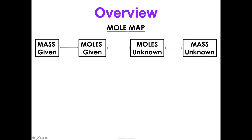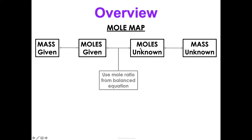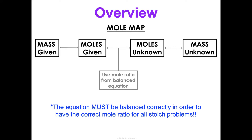You'll have one, two, three steps. If you're given the moles and then you want to know some other moles, it's only a one-step process. So in this mole map, to convert from moles to moles, all you need is that mole ratio we just talked about from a balanced equation. But this has to be balanced correctly or else your molar ratio is wrong and the whole thing's wrong.